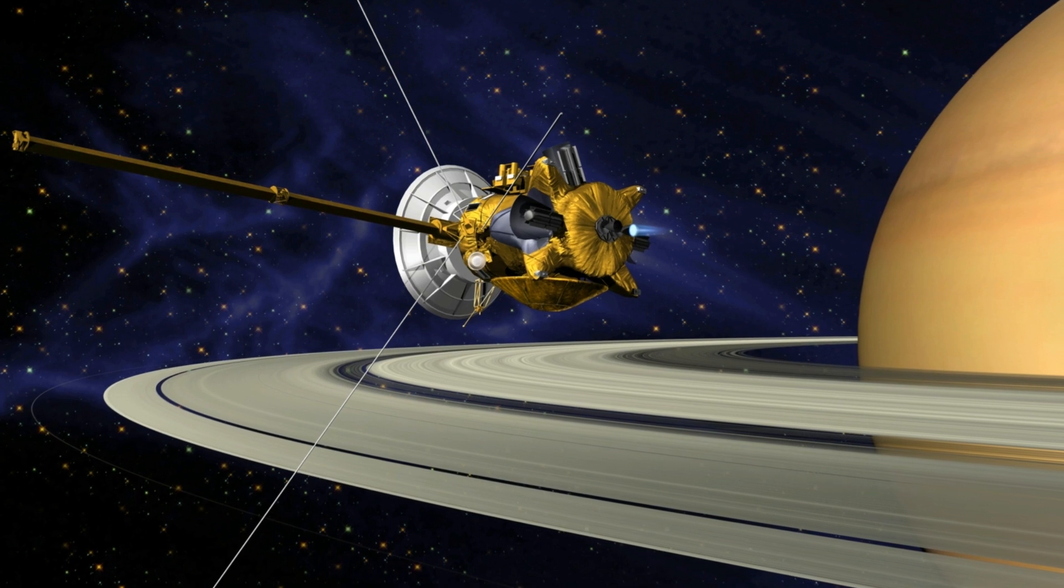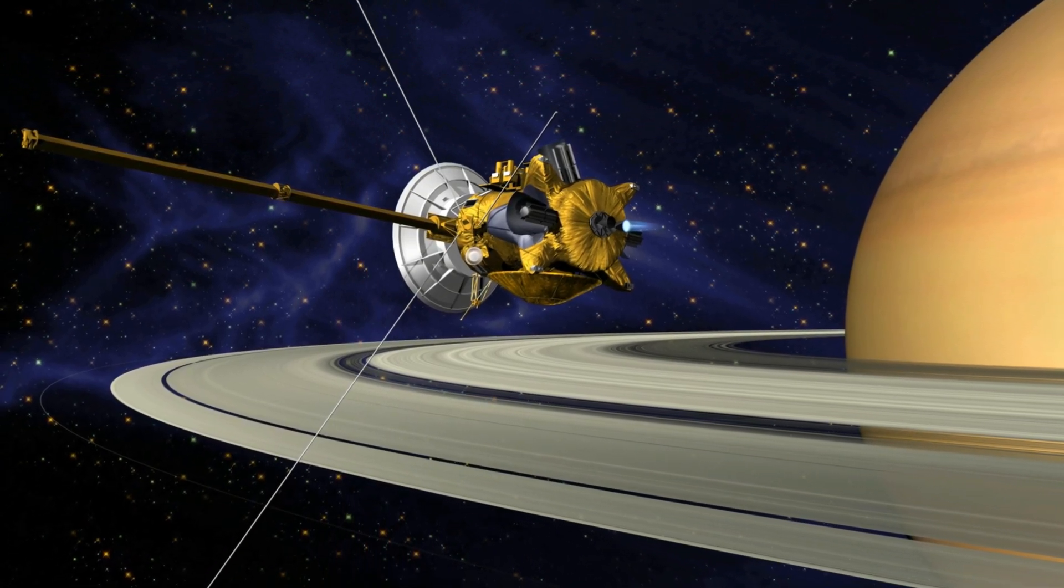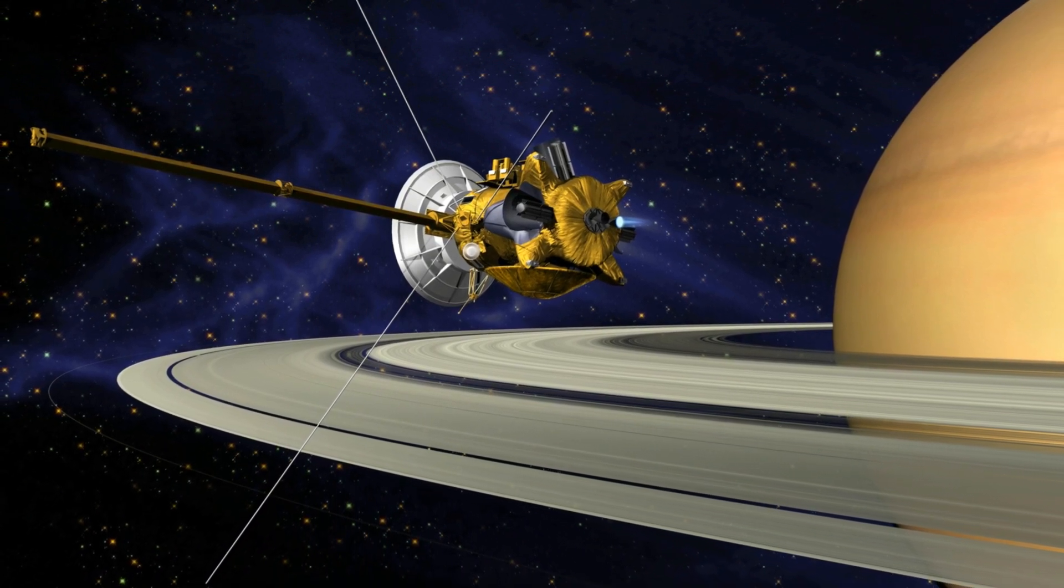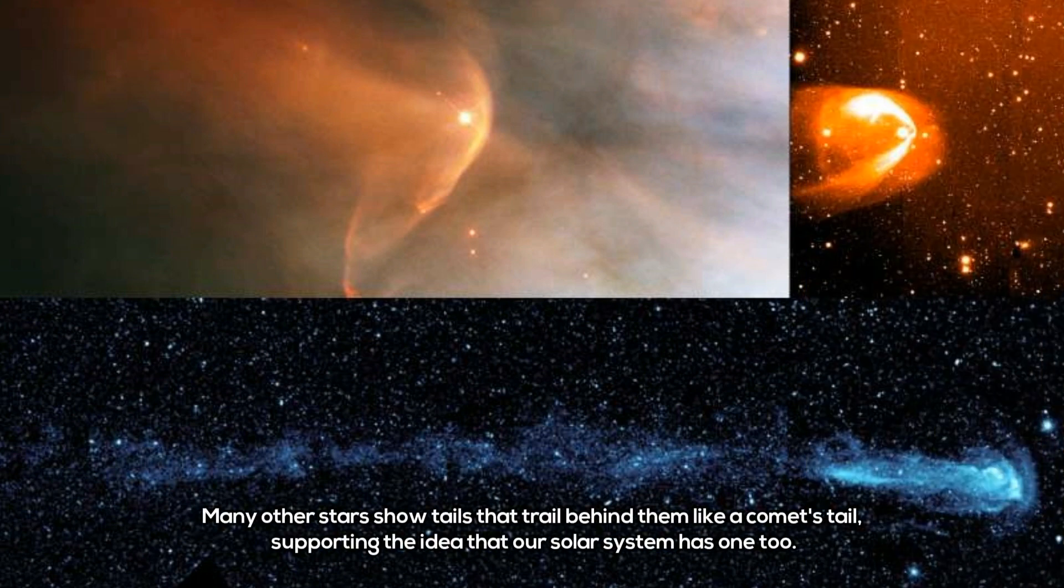Instead of a prolonged, comet-like tail, this rough bubble shape of the heliosphere is due to the strong interstellar magnetic field, much stronger than what was anticipated in the past, combined with the fact that the ratio between particle pressure and magnetic pressure inside the heliosheath is high,